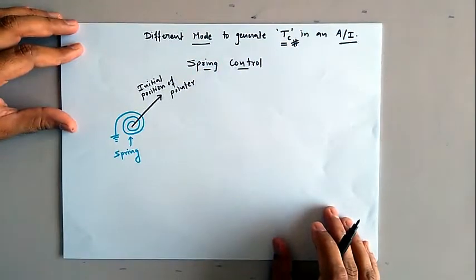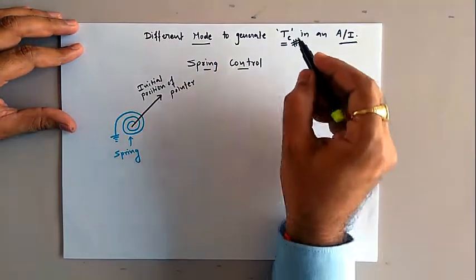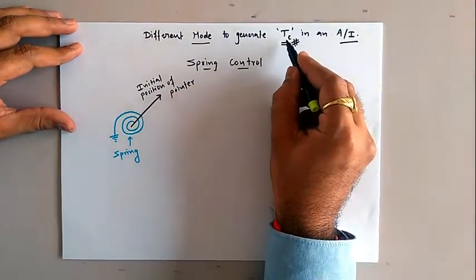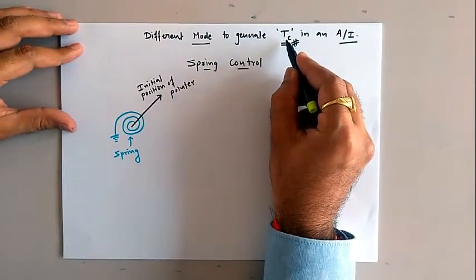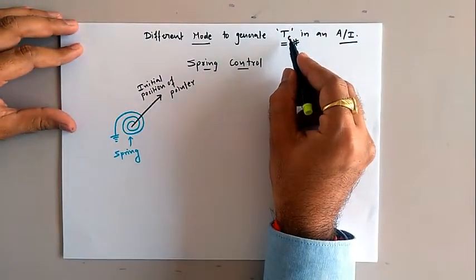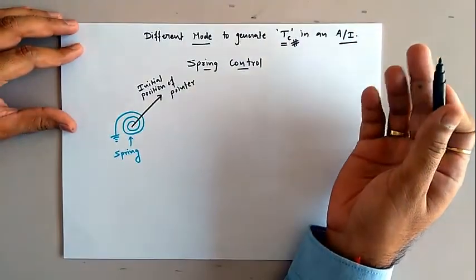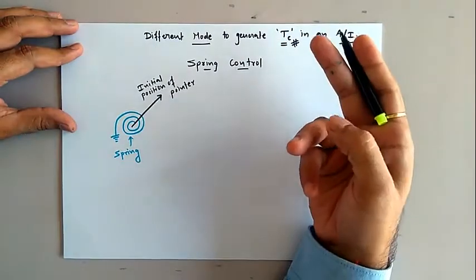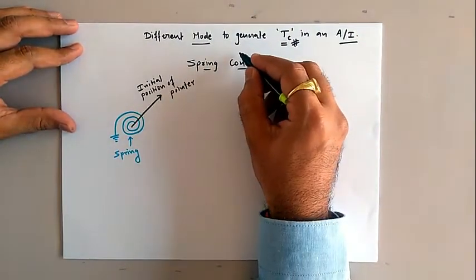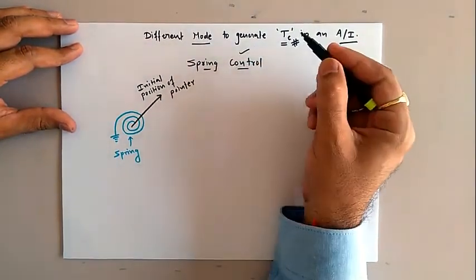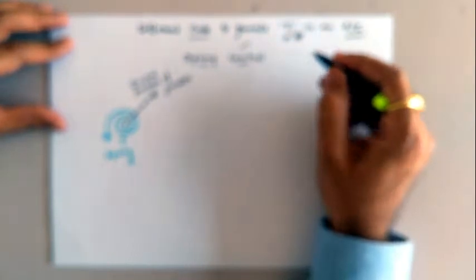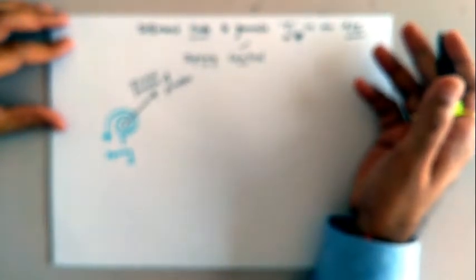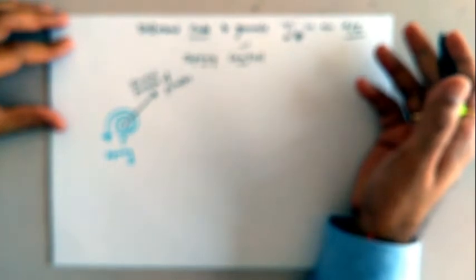As far as the domain of measurement is concerned, the controlling torque in any analog instrument is produced with the help of two different mechanisms. The first one is spring control and the second one is called gravity control. Let us discuss each of them in detail one by one.